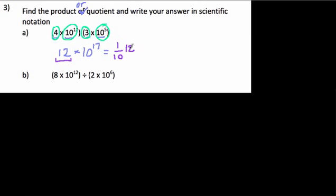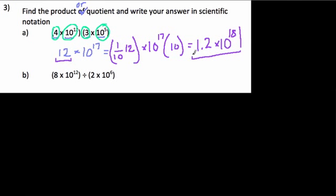I'm going to apply that to the 12. I'm going to group those together. And I don't want to change my overall value. So if I divide it by 10 here, I'm going to multiply by 10 here and keep it balanced. 12 divided by 10 is 1.2. 10 to the 17th times 10 is 10 to the 18th. And now we're done with that one.